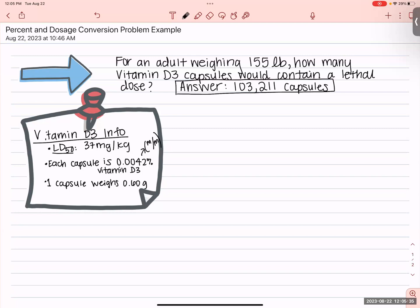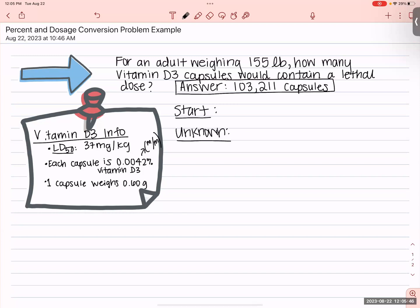So I have some conversions. Let's figure out where we're going to start our dimensional analysis, where we're going to end, and what our unknown is. I advise writing conversions out as equalities, not as fractions, because that really helps a lot of students figure out how to place everything in dimensional analysis correctly.